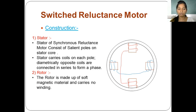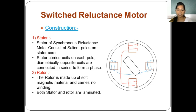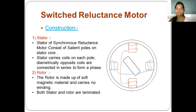The rotor is made up of soft magnetic material and carries no winding. Both stator and rotor are laminated. Laminated structure reduces eddy current losses — by reducing the area for current conduction, we reduce the actual eddy current losses.